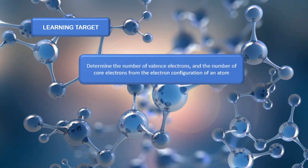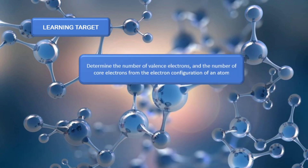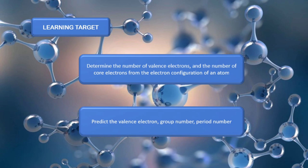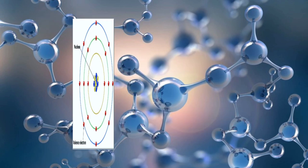First, we're going to determine the number of valence electrons and the number of core electrons from the electron configurations of an atom. And also, we're going to predict the valence electrons, group number, and period number of an atom.